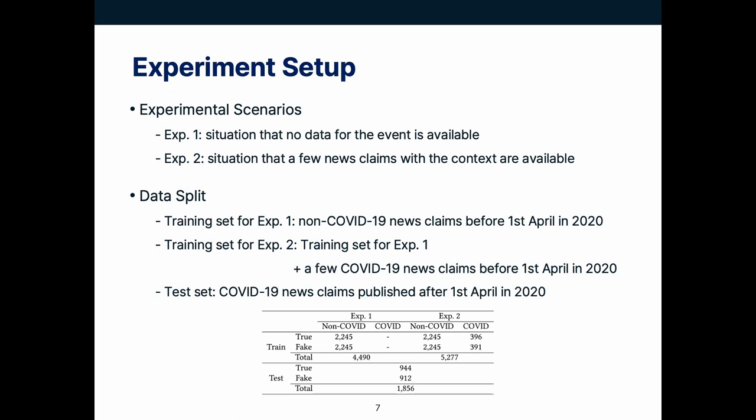Experiment 1 assumes the situation that the critical event has just happened and no data for the event is available. Otherwise, in Experiment 2, we assume that a few misclaims with the context are available. According to the experimental scenarios, we split the data as shown below.